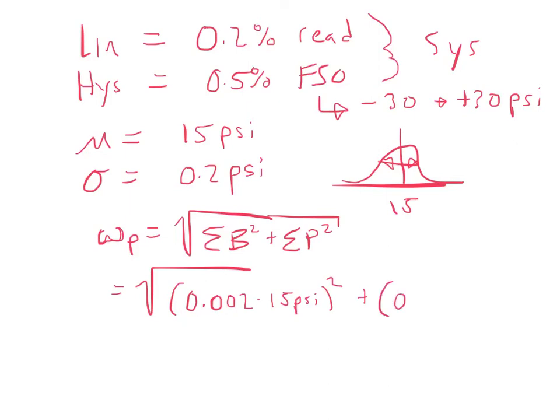Plus our second bias error, which is our hysteresis. So, that's 0.05%, so 0.005 times the full-scale output. Our full-scale output can go between minus 30 and positive 30. So, that's a range of 60 psi. So, we're going to multiply that by 60 psi and square it. And that gives us our sum of our Bs. Now, we need to sum our Ps all under this radical. So, we're going to add plus our sigma.